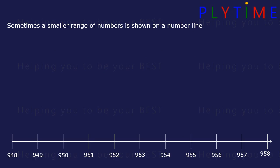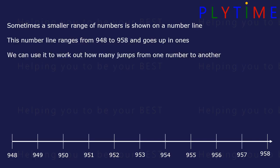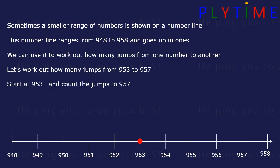Sometimes a smaller range of numbers is shown on a number line. This number line ranges from 948 to 958 and goes up in ones. We can use it to work out how many jumps from one number to another. How about from 953 here to 957? Let's count the jumps.